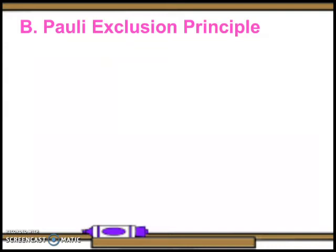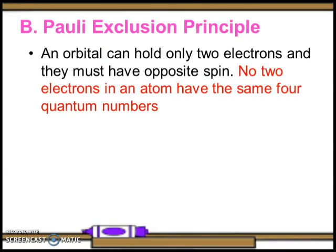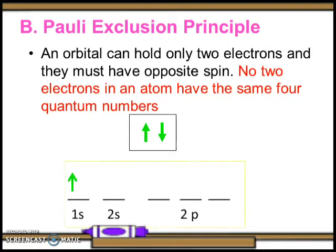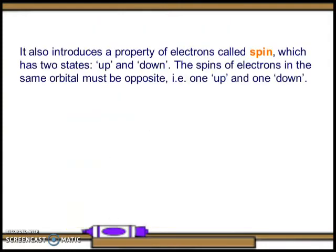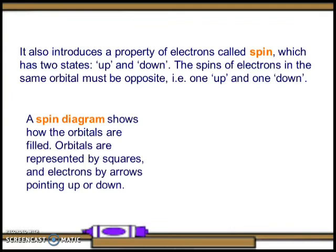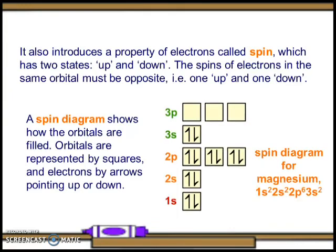The Pauli exclusion principle states that an orbital can hold only two electrons and they must have opposite spin — no two electrons in an atom have the same four quantum numbers. It introduces the property of electron spin, which has two states: up and down. The spins of electrons in the same orbital must be opposite — for example, one up and one down.